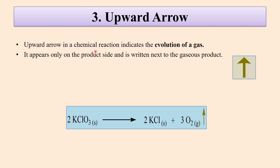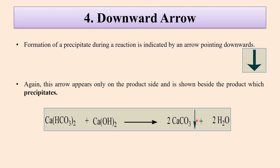The upward arrow in a chemical equation indicates the evolution of gas. It appears only on the product side and is written next to the gaseous product. As shown here, oxygen is a gas, so the upward arrow demonstrates the evolution of gas. The downward arrow indicates the formation of a precipitate during the reaction. Here are the solid precipitates, and this downward arrow shows their formation. It is also shown on the product side.